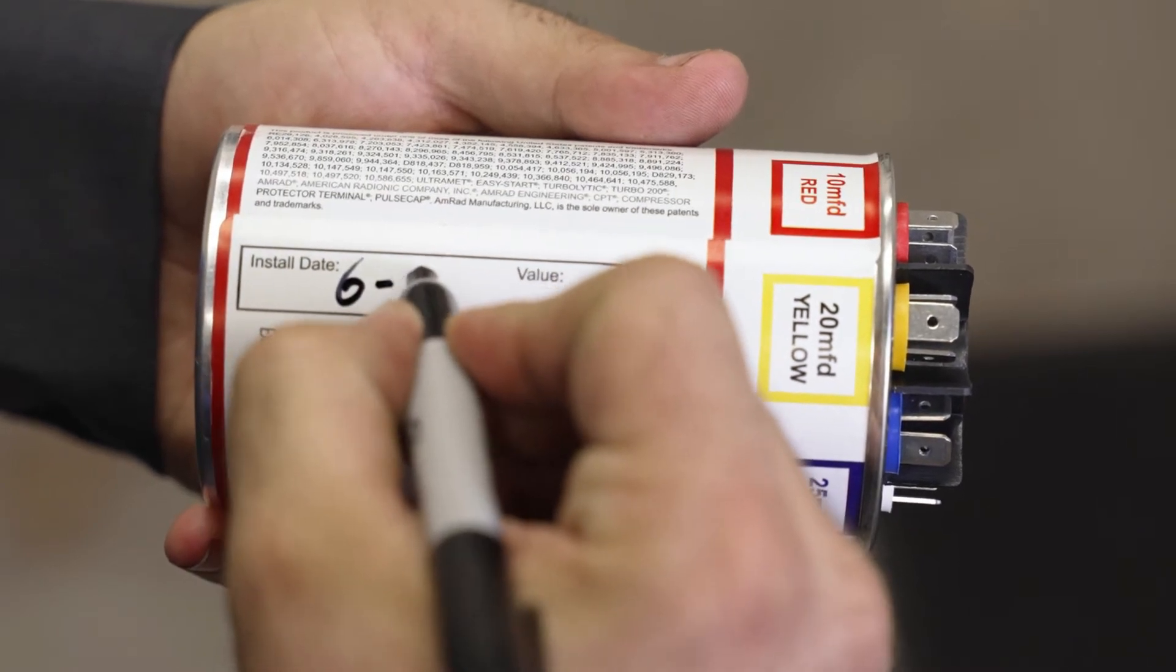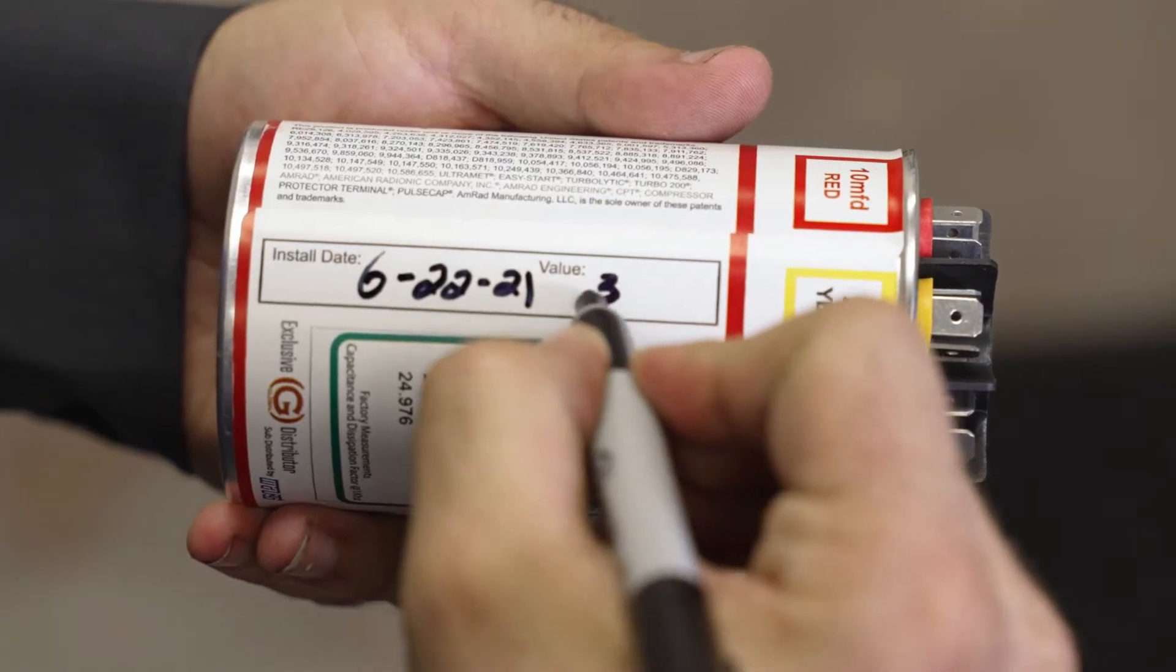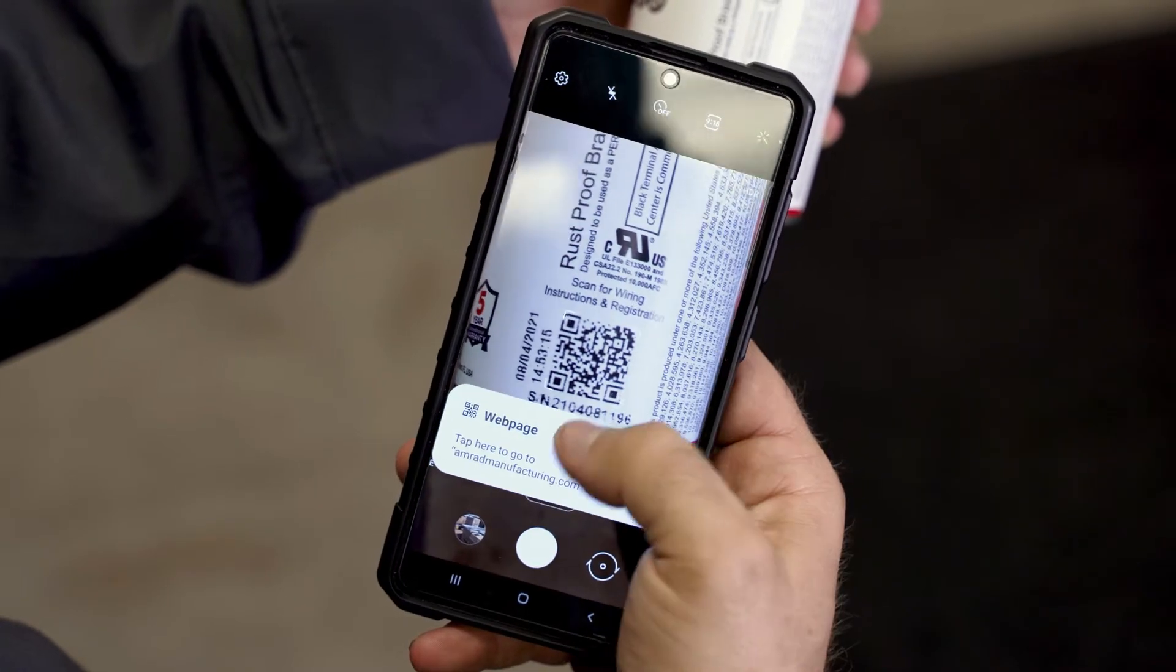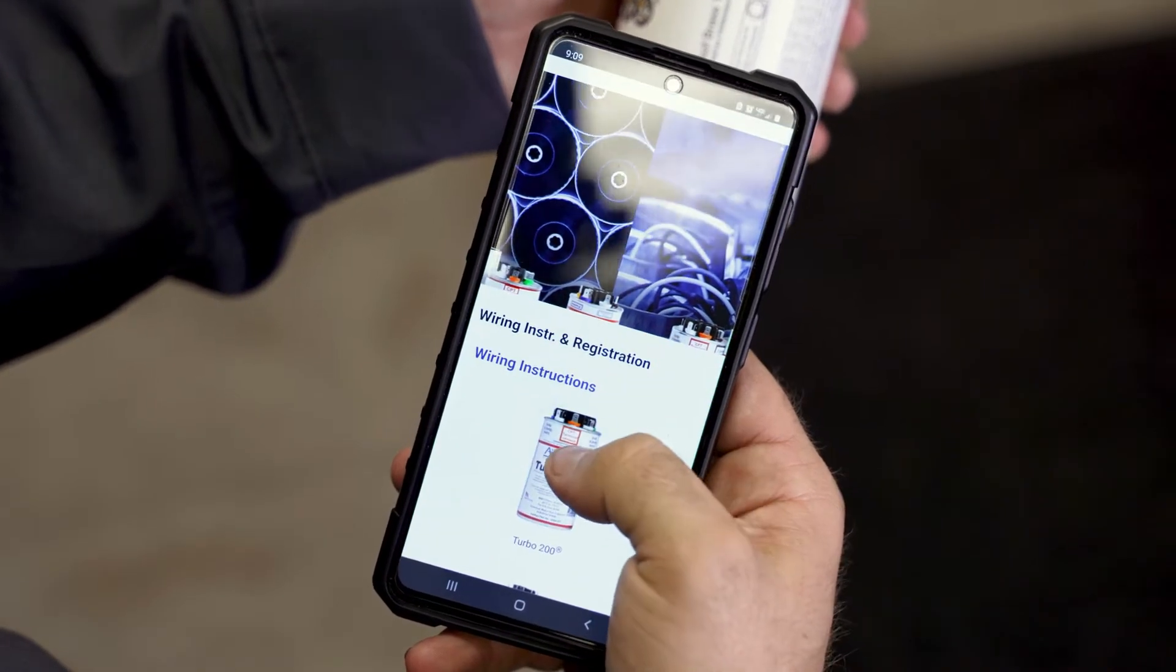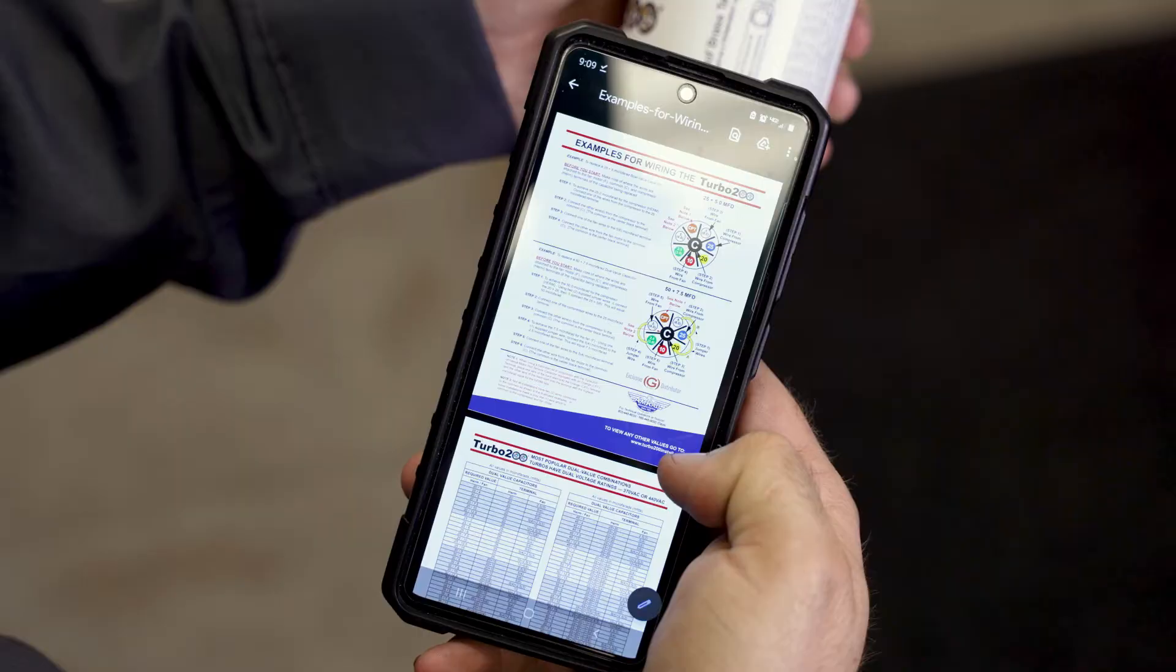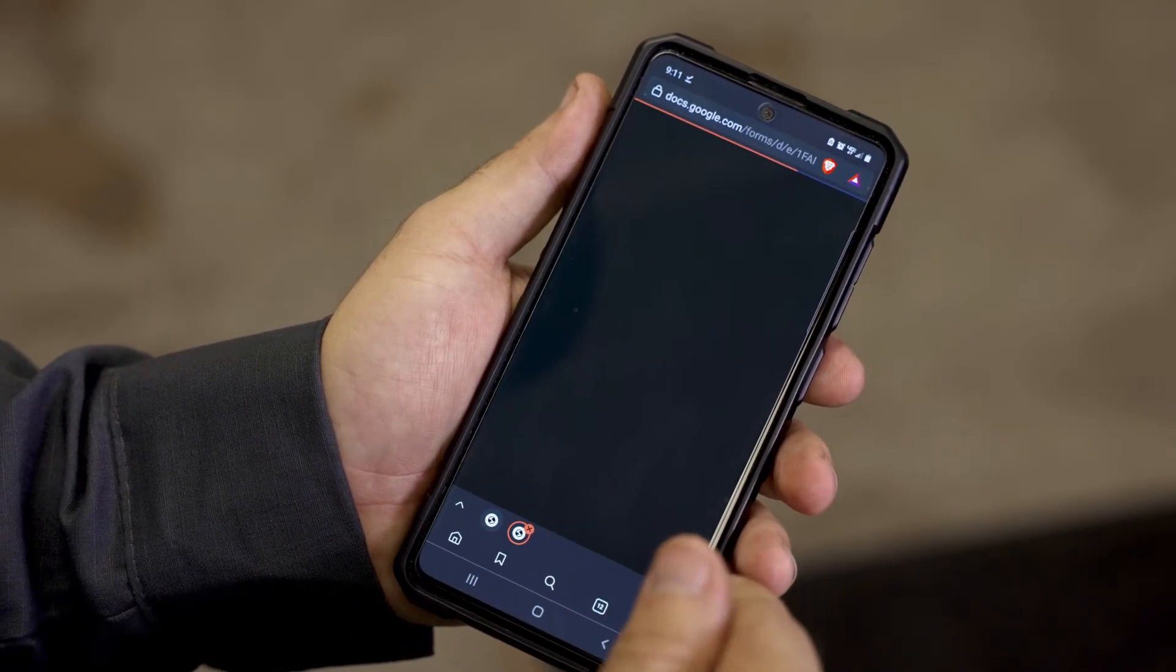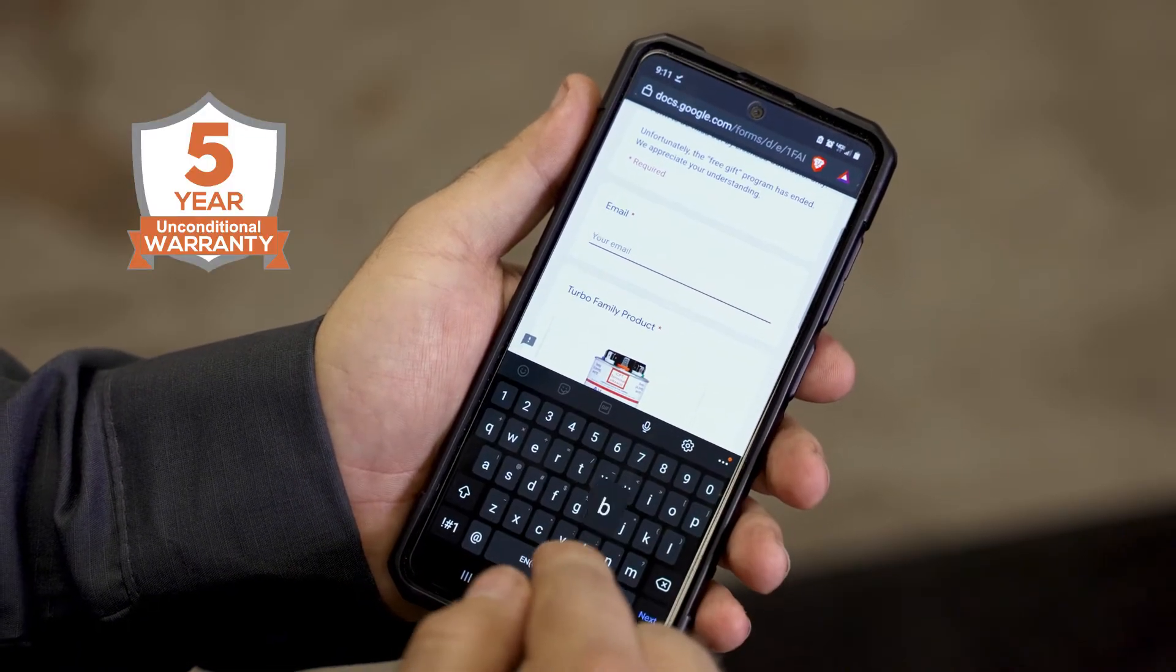Before you begin, be sure to mark the install date and the value needed for the install on the side of the turbo. There's also a scannable QR code on the side of the turbo with digital wiring instructions and online registration. Registration is not required for the 5-year unconditional warranty.